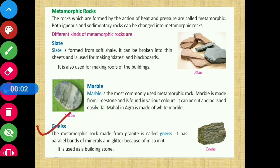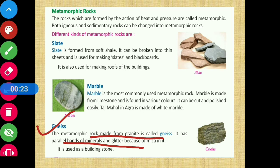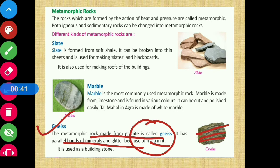Next is gneiss — spelled G-N-E-I-S-S but pronounced 'nice'. The metamorphic rock made from granite is called gneiss. It has parallel bands of minerals and glitters because of the presence of mica in it. Gneiss is used as a building stone.